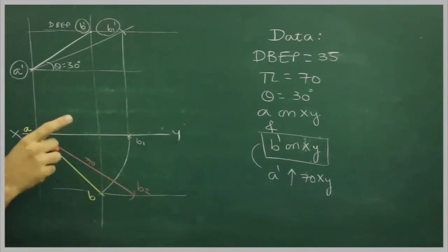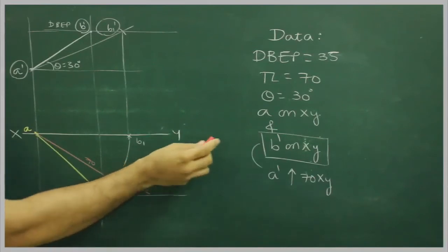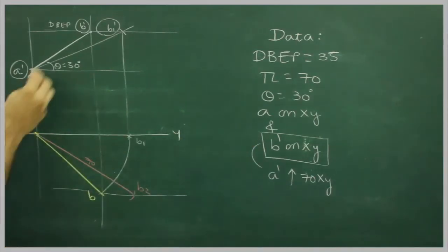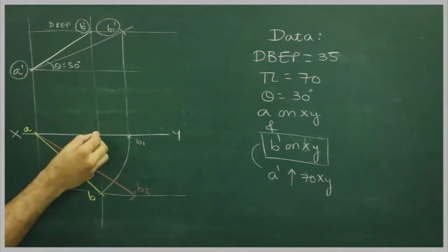Now if we change to our original data, that is B' on x-y line, so what we can do, take B' to A'', and from here this point would be B''.